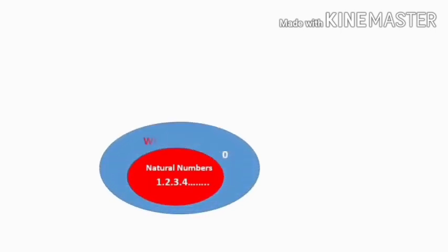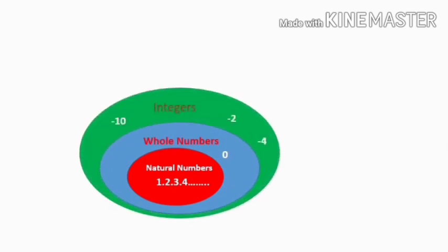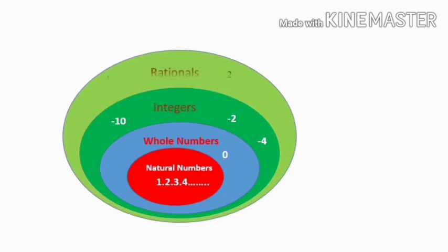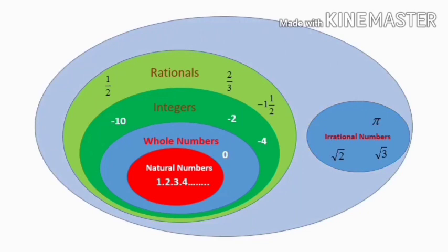Let us summarize the classification of numbers. The innermost classification is natural numbers — 1, 2, 3, 4, etc. Next is whole numbers — 0, 1, 2, 3, 4, etc. Next is integers — negative numbers, 0, and positive numbers. Next is rational numbers — numbers in the form p/q where p and q are integers and q is not equal to 0. Next, we have irrational numbers — pi, root 2, root 3, and so on. All together, rationals and irrationals are called real numbers.